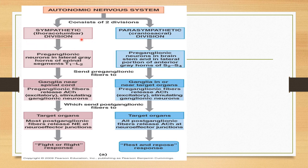Sympathetic thoracolumbar division: The pre-ganglionic neuron originates from the lateral gray horn of the spinal segments T1 to L2. Pre-ganglionic fibers enter ganglia near the spinal cord. These pre-ganglionic fibers release acetylcholine, which stimulates the ganglionic neuron, sending post-ganglionic fibers to the target organ. Most post-ganglionic fibers release norepinephrine at the neuro-effector junction, producing the fight-and-flight response.